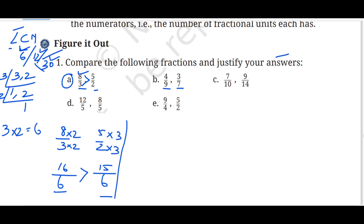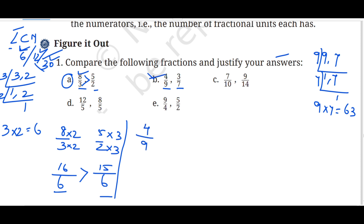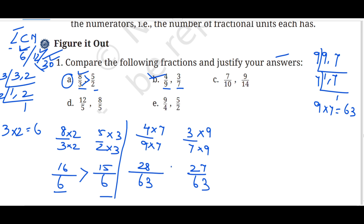For part B, we have 4 upon 9 and 3 upon 7. We take the LCM of 9 and 7. 9 ones are 9, and 7 doesn't divide into 9, so drop it. 7 ones are 7. So 9 into 7 equals 63, which is the LCM. Now 9 and 7 are 63. We multiply 4 by 7 to get 28 upon 63, and 3 by 9 to get 27 upon 63. Since 28 is bigger than 27, 4 upon 9 is greater than 3 upon 7.